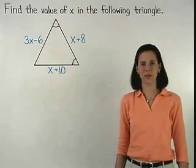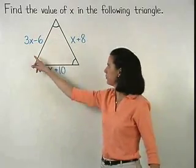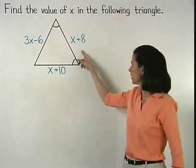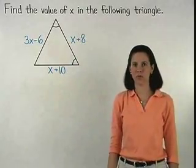So let's say we're given a triangle with two congruent angles, sides with lengths of 3x minus 6, x plus 8, and x plus 10, and we're asked to find the value of x.